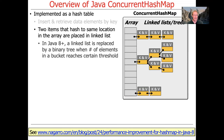An interesting optimization added in Java 8 and beyond: if lots of keys all hash to the same location, the underlying implementation will replace the linked list with a tree. If the number of elements in a bucket reaches a certain threshold, it switches to a binary tree, which helps maintain very good performance in that case. You can read more about this at the link at the bottom of the slide.